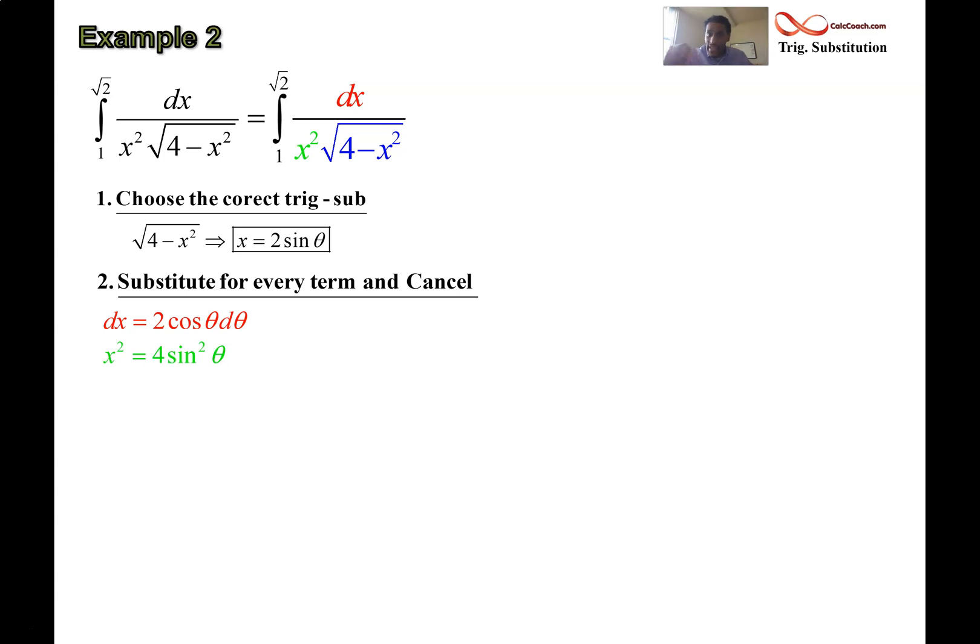The radical, whenever you let x equal a sine theta, the radical becomes a cosine theta. But if you need to see the individual steps of how that works out, go ahead and replace x by a sine theta. You'll see that you end up with a cosine theta afterwards because you have a perfect square.